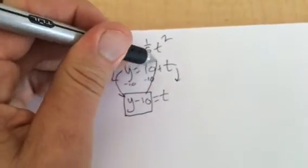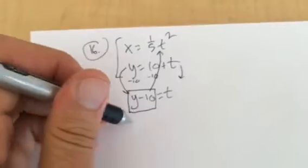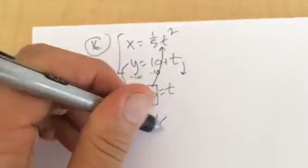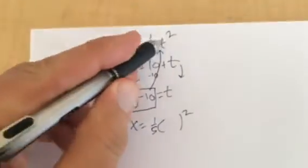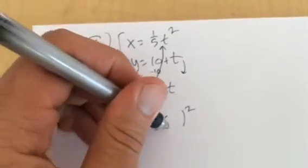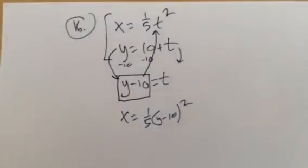So I can take that value and just plug it into t in the other equation. So x equals one-fifth t squared. t is just y minus 10. And we are good.